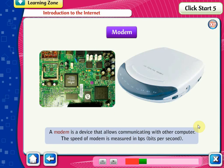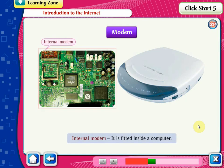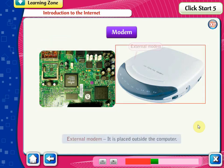A modem is a device that allows communicating with other computers. The speed of a modem is measured in BPS. There are two types of modem: an internal modem, which is fitted inside a computer, and an external modem, which is placed outside the computer.